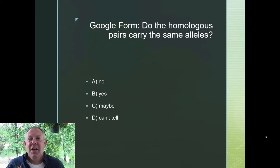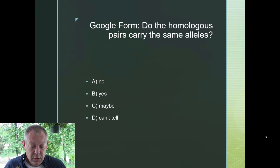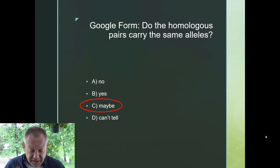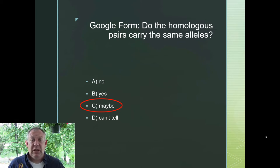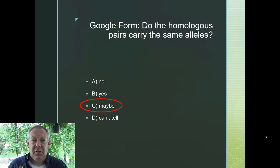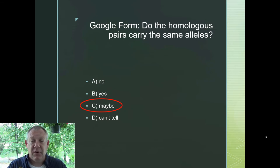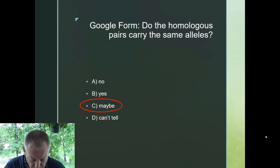Do the homologous pairs carry the same alleles? The answer is maybe — they carry the same genes that code for the same traits, but they might have different forms of those genes. Depending upon your parents' genetics, you might have the same alleles or different alleles. And that's important to heredity.